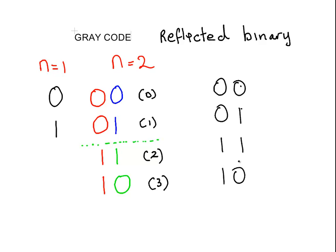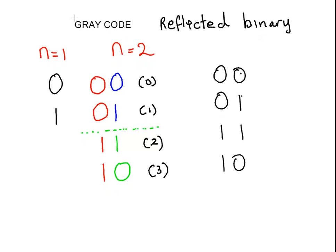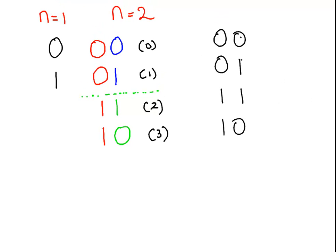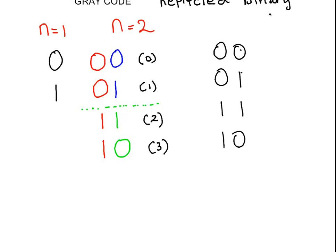That's how you construct grey code. I'm going to do it again one more time. And what I'm going to do is actually go to n equals 3 bits.